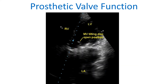Prosthetic mitral valve with tilting disc in open position, seen on echocardiography from a modified apical 4-chamber view. The dense shadow below is the ring of the prosthetic mitral valve. Movements of the disc can be assessed in this view, and the angle through which the disc moves can be evaluated — here it is about 45 degrees.